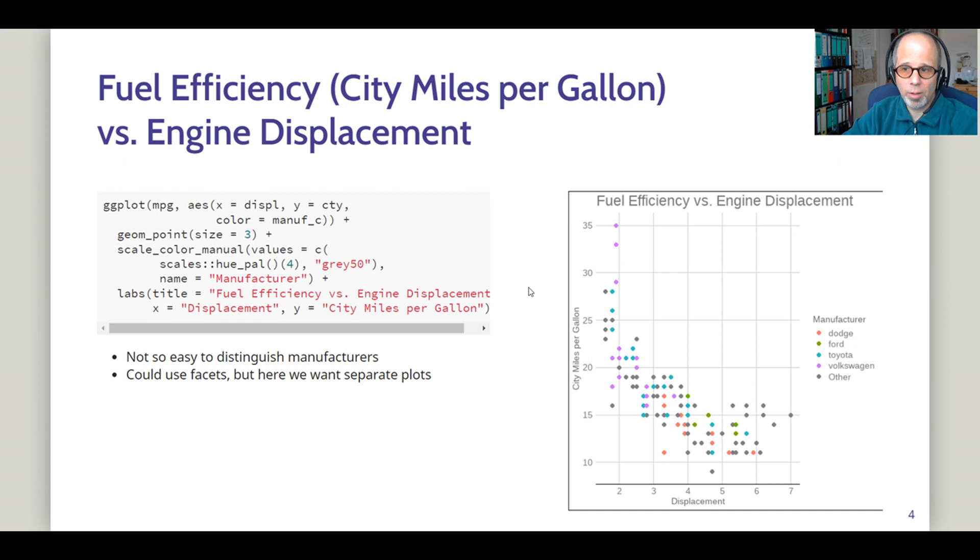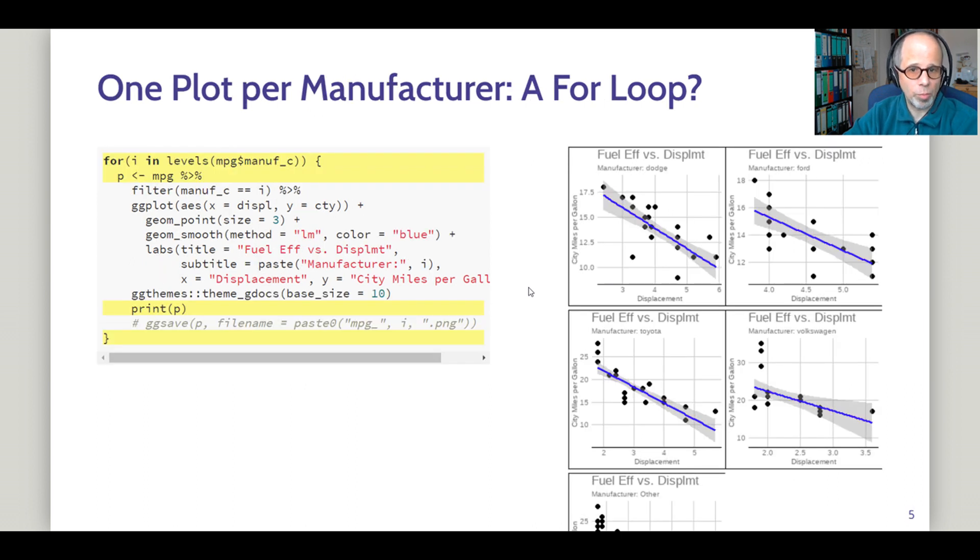So the first solution that may come to mind is a for loop. I iterate using the iterator i over the levels of this recoded manufacturers variable that contains these five manufacturers. The four genuine manufacturers and the others category. And then I use this iterator i to filter the data here for this manufacturer in each iteration. And I also use this iterator to create the subtitle of the plot with that manufacturer. We see on the right hand side we do get five different plots.